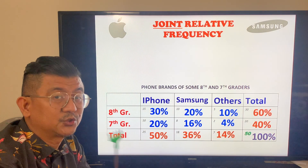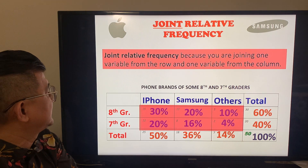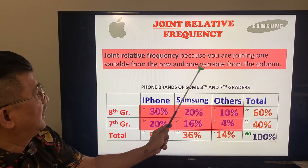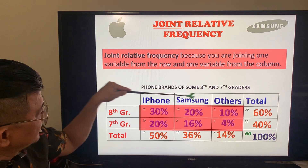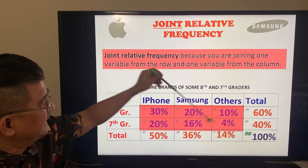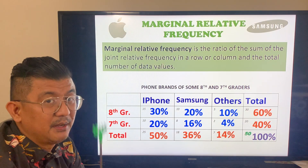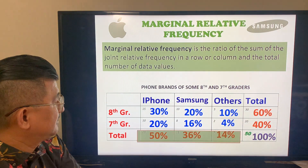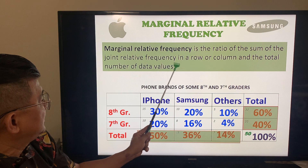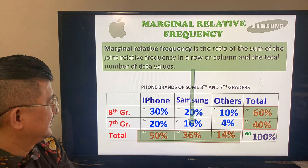From the previous table, we'll make labels. The numbers in the middle are called joint relative frequency — because you are joining one variable from the row and one variable from the column. They meet at each cell. All the data in pink is the joint relative frequency. The marginal relative frequency comes from the word 'marginal' — look at the margins. It is the ratio of the sum of the joint relative frequency in a row or column and the total number of data values. So the totals at the margins are the marginal relative frequencies.